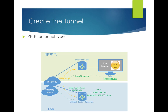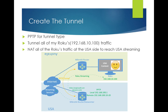For us, we're going to create a tunnel from our Australian router to the US router. We're going to use PPTP because it's the lightest and puts the least amount of load on the router. I'm going to tunnel all of my Roku's traffic — just that one IP, 192.168.10.100 inside my network — and I'm going to NAT all of the Roku's traffic at the US side when it comes out, so that it appears to be sourced from the US.